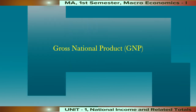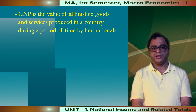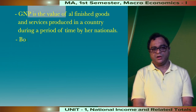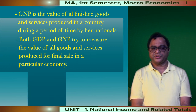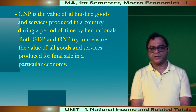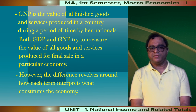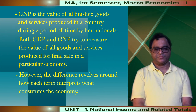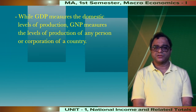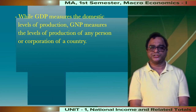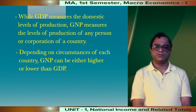Gross National Product, or GNP, is the value of all finished goods and services produced in a country during a period of time by its nationals. Both GDP and GNP try to measure the value of all goods and services produced in a particular economy. However, the difference revolves around how each term interprets what constitutes the economy. While GDP measures the domestic levels of production, GNP measures the levels of production of any person or corporation of a country. Depending on circumstances, GNP can be either higher or lower than GDP.